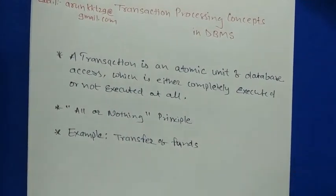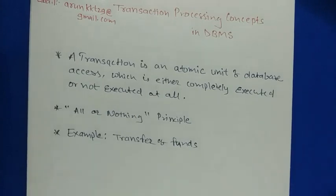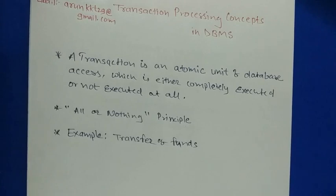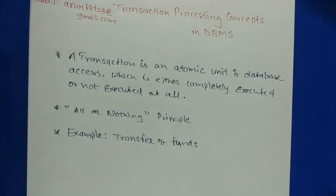One example is a banking database where you wish to transfer funds, withdraw an amount from your account, or debit and credit certain amounts. When data is operated on by an application, we have certain instructions that will be executed. These instructions are not just normal instructions as executed in an operating system; they need something more than normal instructions.